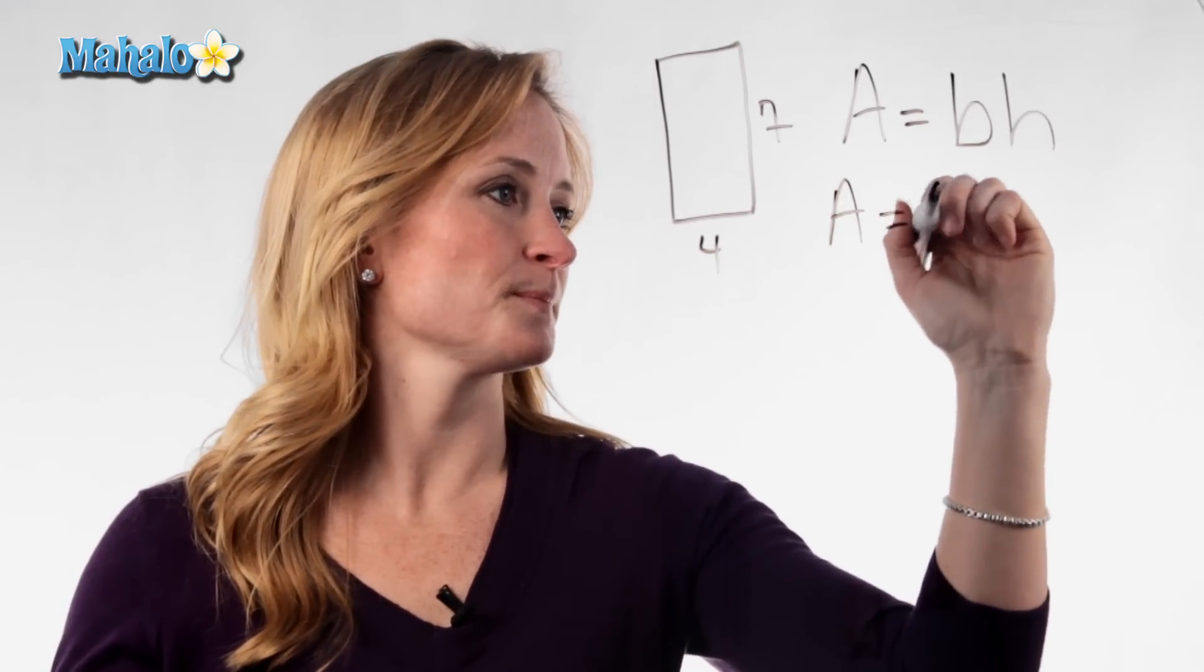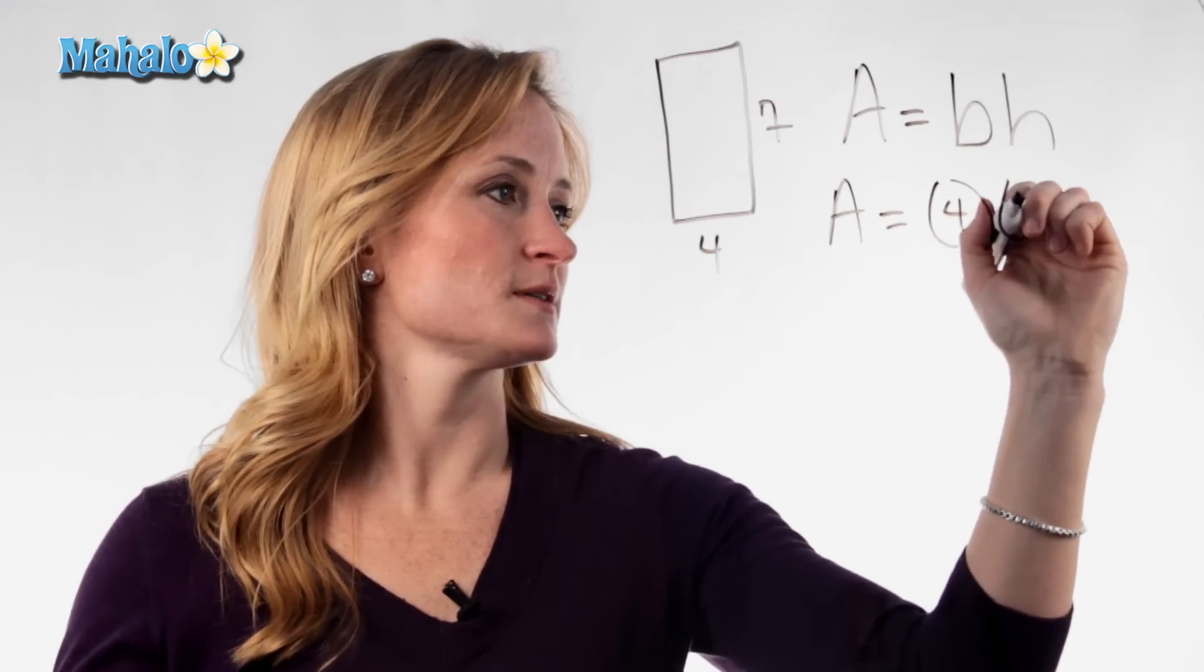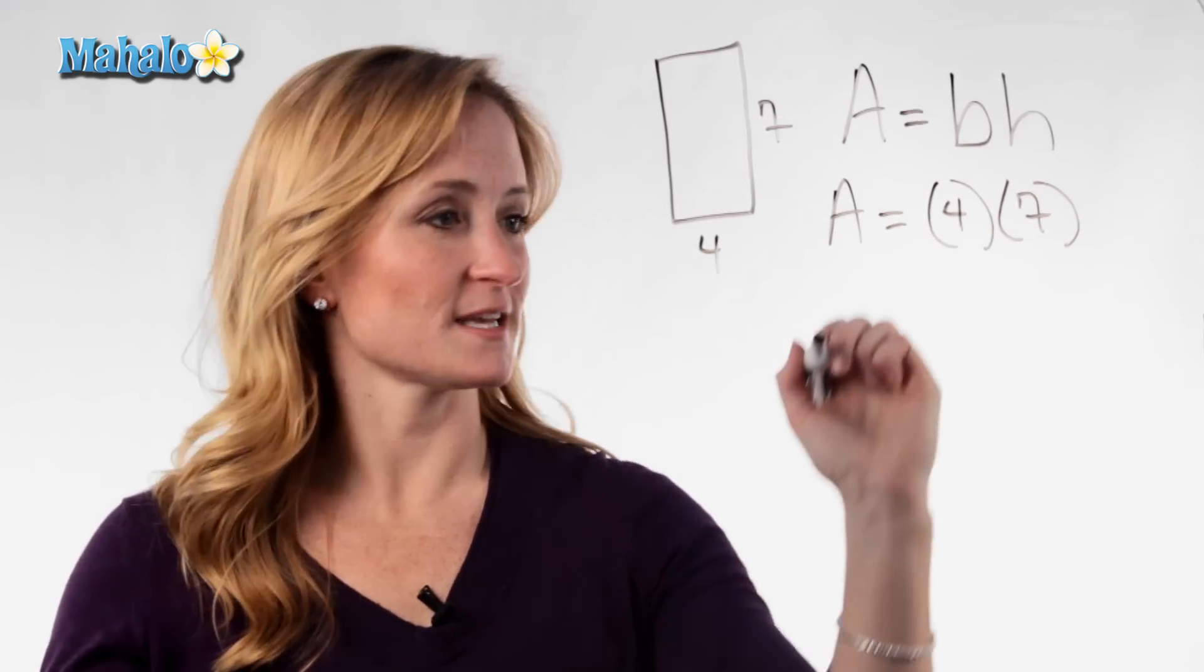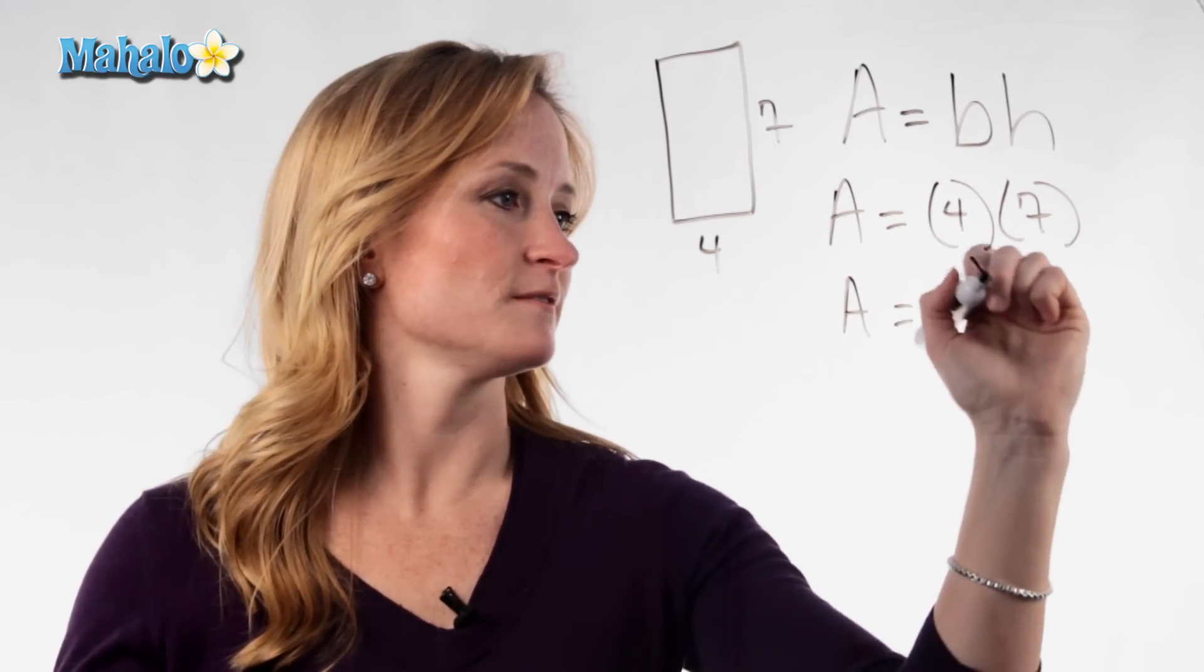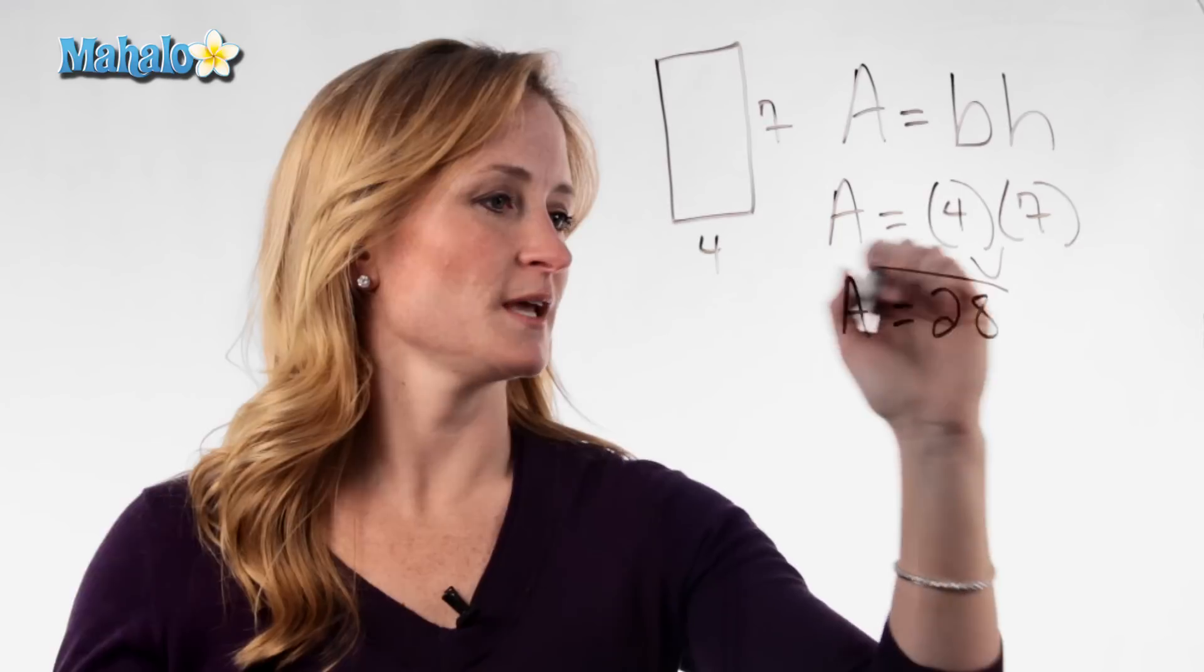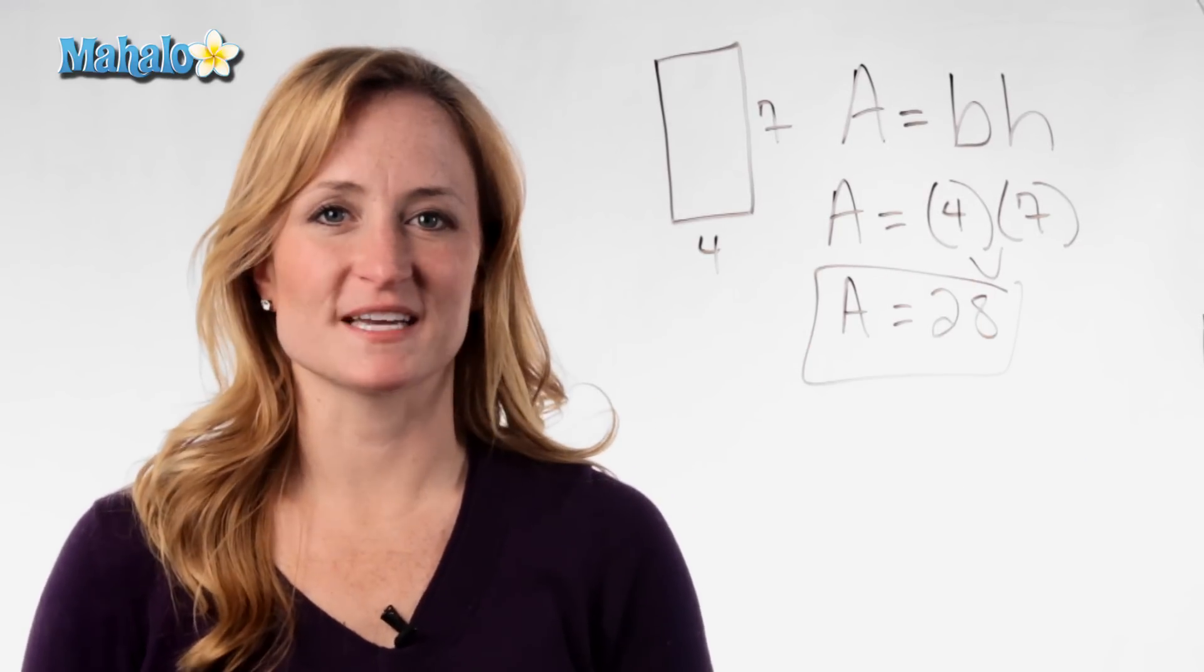So go ahead and just plug your numbers in. 4 times 7. So this rectangle would have an area of 4 times 7 is 28. That's how you find area of a rectangle.